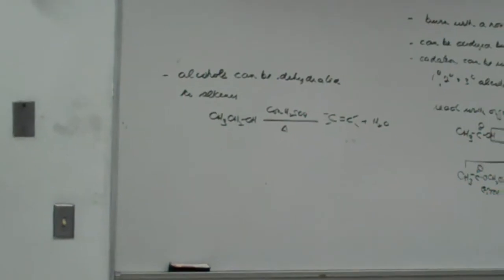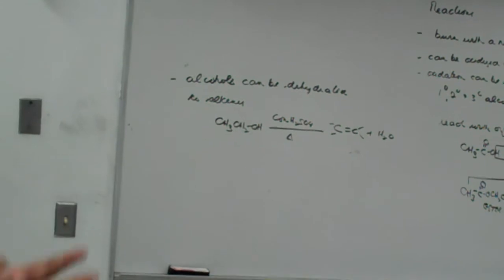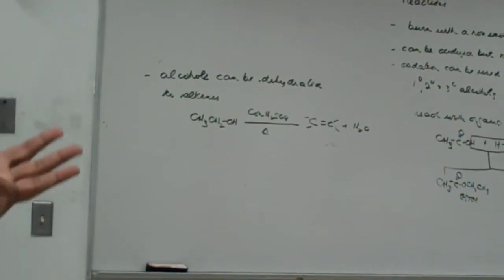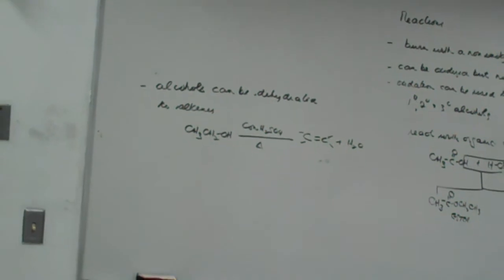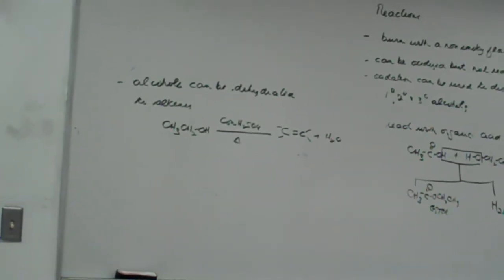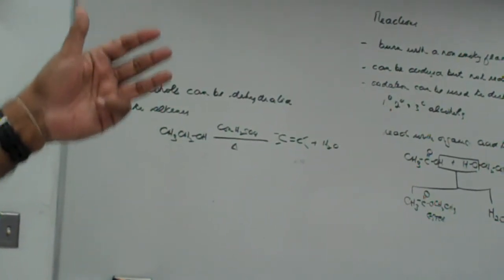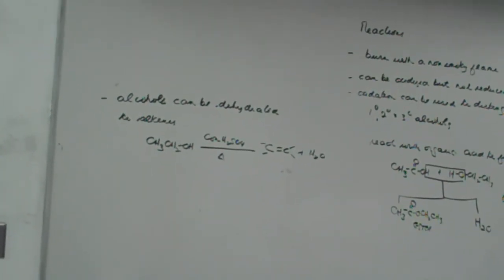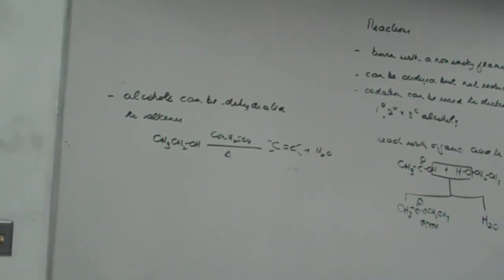So those are the only reactions that we're going to do dealing with alcohol. Know how to be able to distinguish between primary, secondary, and tertiary. Know how to name them. Know the different oxidation products that we get when we oxidize the three types. They form esters when treated with organic acids, and they can be dehydrated to form an alkene.